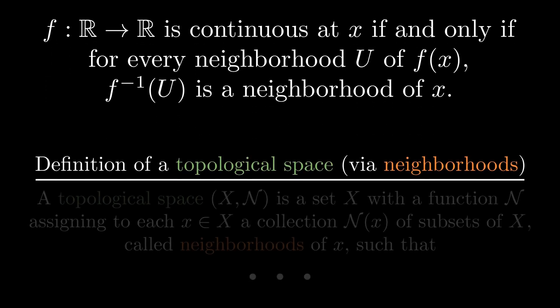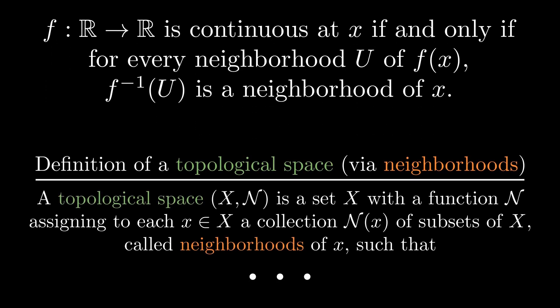So we could define a topological space as a set X with a function which assigns to each point a collection of neighborhoods. Since neighborhoods should not just be any set, we also assume that the space satisfies some properties.